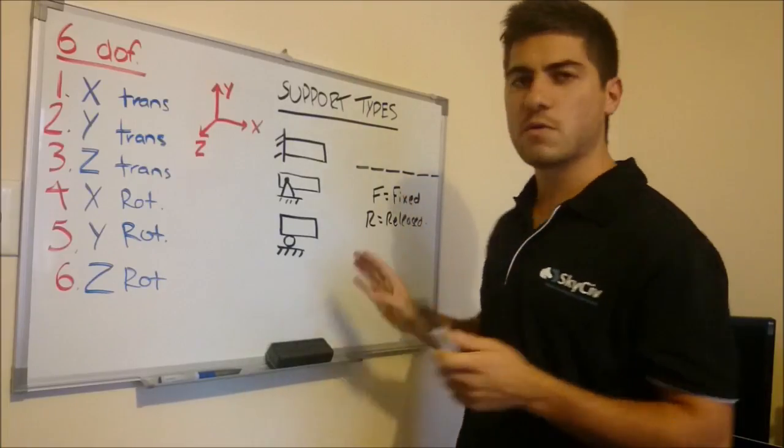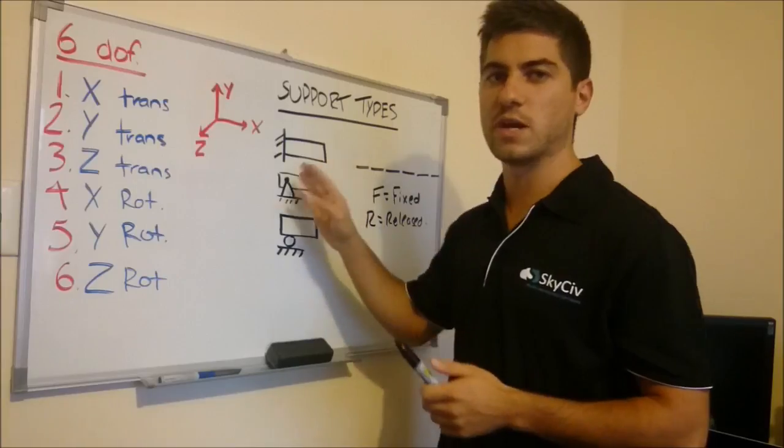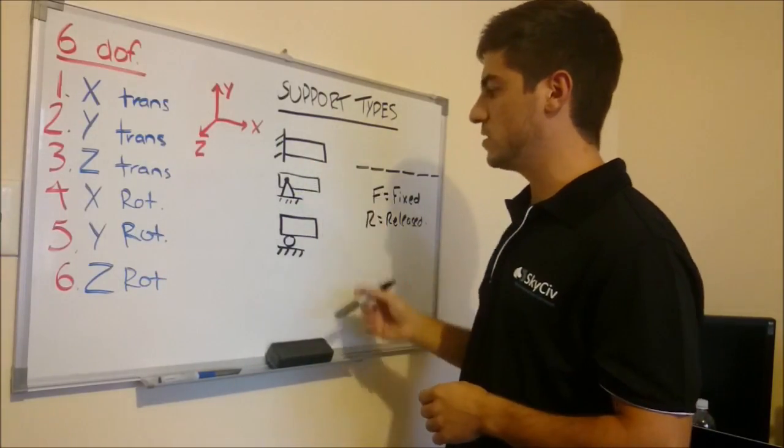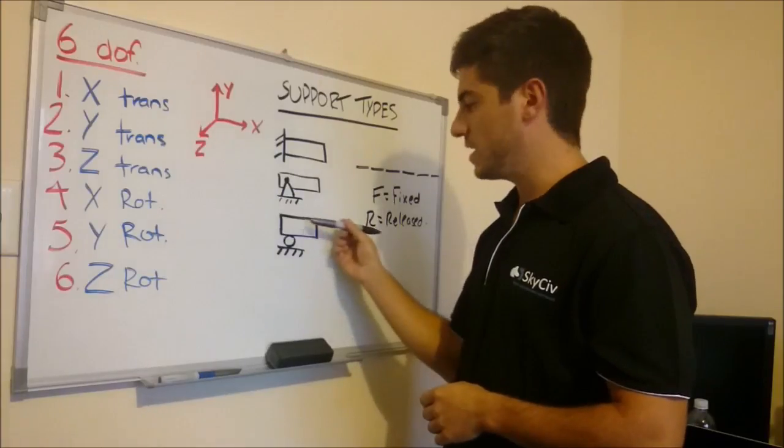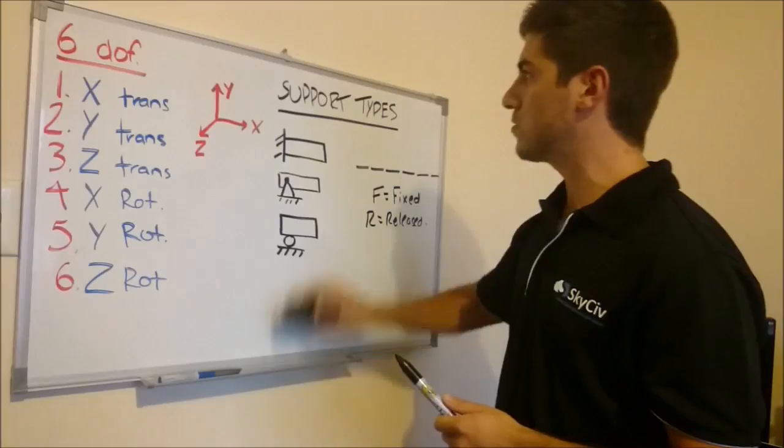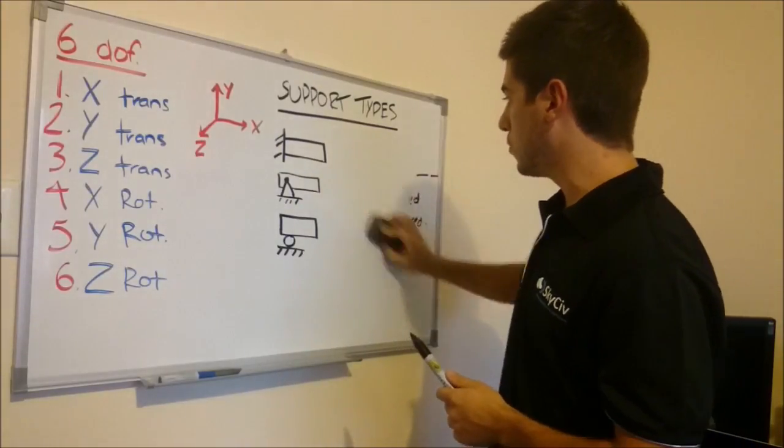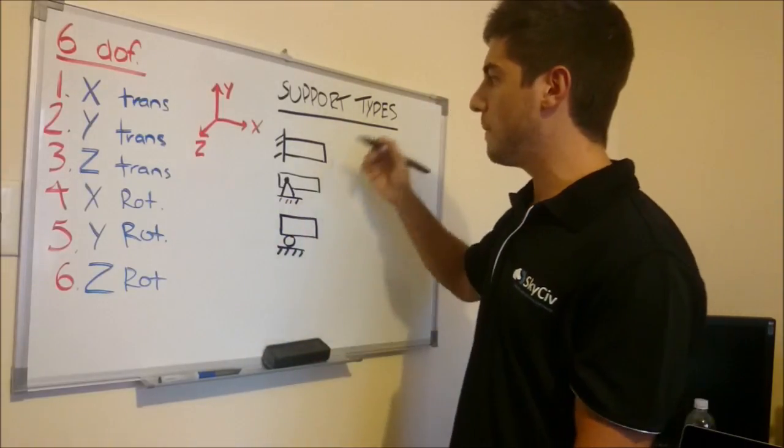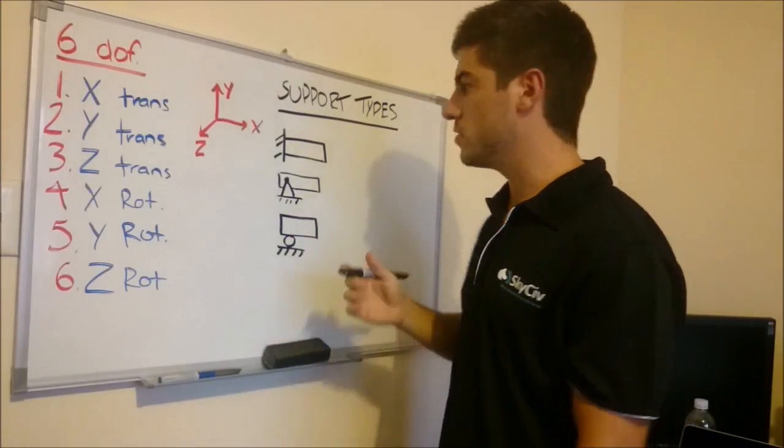Okay, so basically an easy way to remember is anywhere there's an R, there's a degree of freedom, which means that it can move. So an R, for instance, on a roller, would be in the X, because it can move along that X, it's not fixed there. So I'll take you through these 3 simple support types. They're quite common, you've probably seen them before. I'll just give you the codes to them and give you an understanding of how to use them.